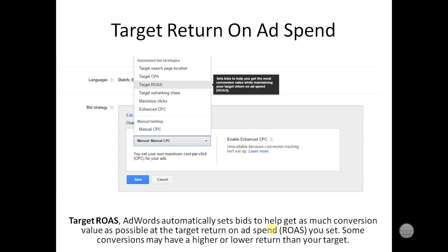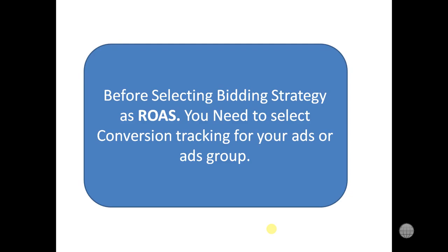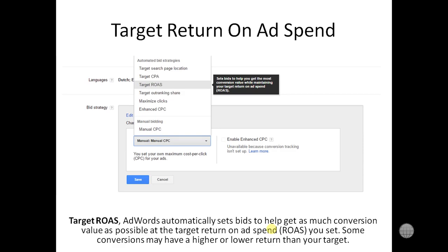But before using ROAS, what should we do? We should set a conversion tracking value for our ads or our ad groups — then we can use ROAS. Without setting a conversion value, we can't use ROAS. So if you want to use ROAS, you need to have a conversion value set for your ads. You should use ROAS for all your AdWords or ad groups.